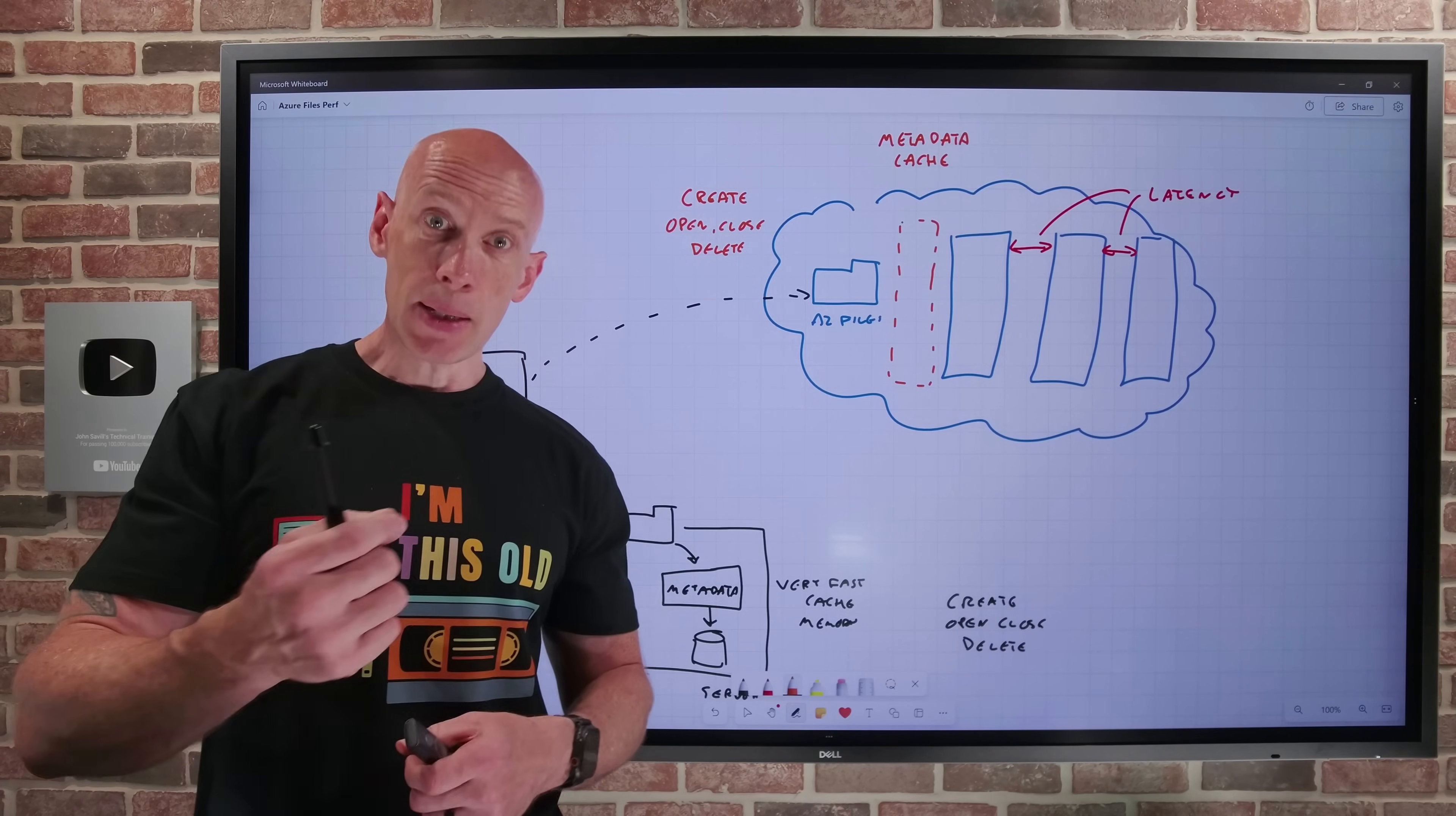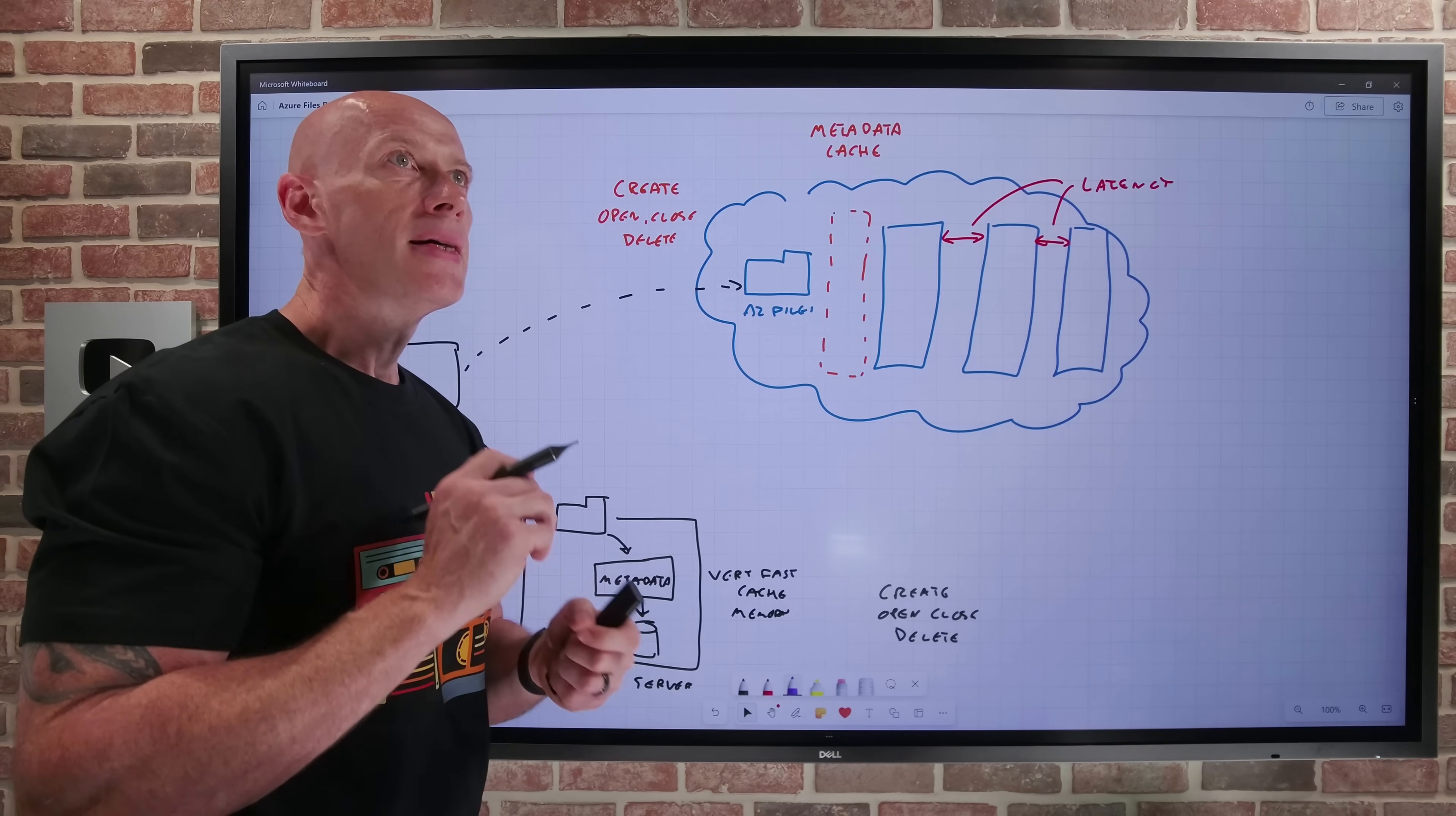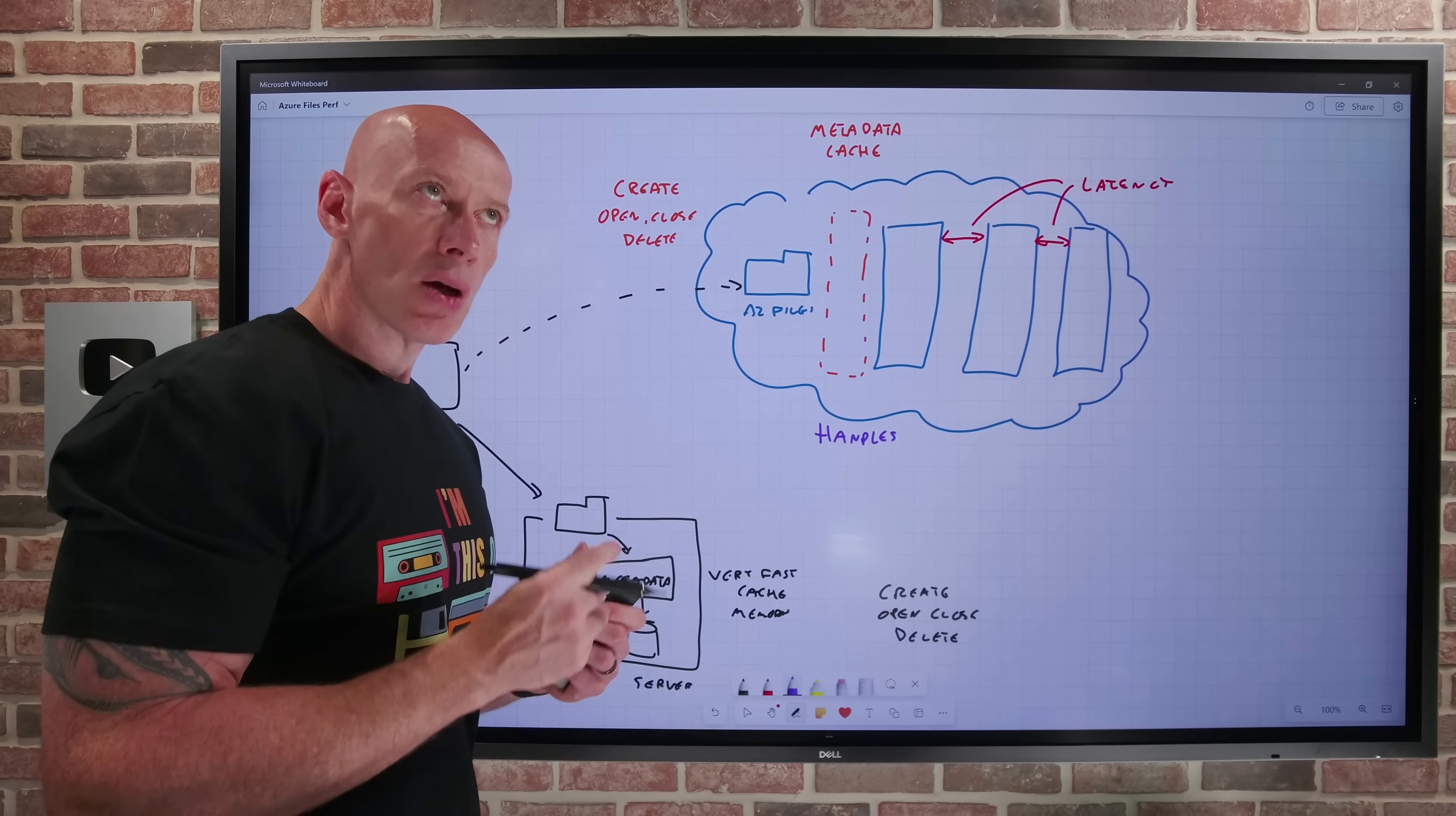Now the next improvement, which is separate from the metadata cache, is around numbers of handles. So when I think about how many on a particular file, how many handles can I have? I think it's 2,000 today for a file. How many handles can I have to the root? It's 10,000 today, which is actually up itself from the previous limit of 2,000. And those handles are actually super important when I think about the scale.